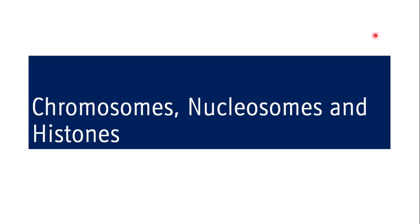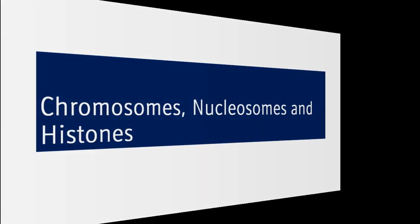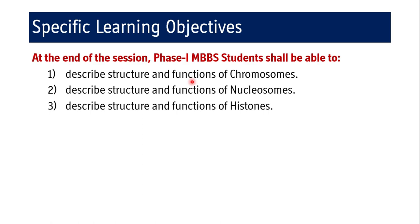In this particular session we are going to cover what are chromosomes, nucleosomes and histones. What is the importance of this topic? We are going to understand the structure of DNA and RNA. To understand the structure of DNA it is pertinent to understand what are chromosomes, what are nucleosomes, what are histones and what are non-histone proteins associated with DNA and RNA. The specific learning objectives are: at the end of the session, a Phase 1 MBBS student shall be able to describe the structure and functions of chromosomes, nucleosomes, and histones.